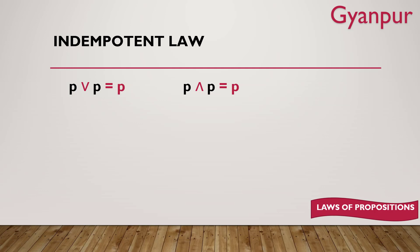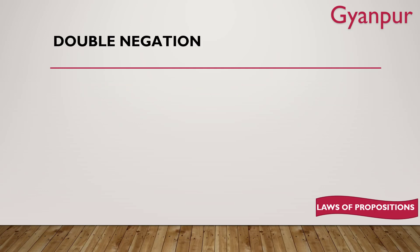Now coming to double negation. In double negation, you have a statement whose negation is taken, and then another negation is applied on top of it. When there are two negations on a particular variable, the negations cancel each other out and we are left with the original variable. So negation of negation p gives you p.